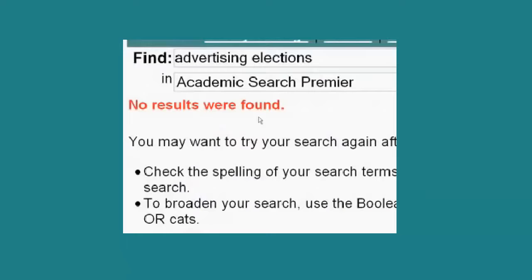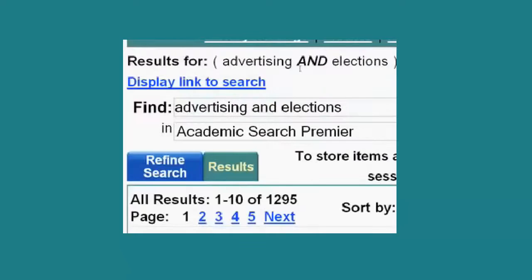That's good and all, but getting back to my topic, advertising and elections. Sure, let's go back to the database. I have a couple of keywords in mind to start with. How about we do advertising and election? And you'll notice I put that Boolean operator AND in there so that we get articles that contain both concepts. Wow, that's great, but I don't have time to go through 1,200 results.